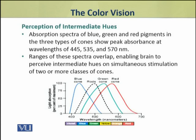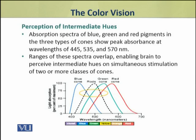However, we can perceive many intermediate colors. How is this possible? It is possible because the absorption spectra of blue, green, and red pigments in the three types of cones show peak absorbance at wavelengths of 445, 535, and 570 nanometers. But you can see here that the ranges of these spectra overlap. This overlapping enables the brain to perceive intermediate colors on simultaneous stimulation of two or more classes of cones.